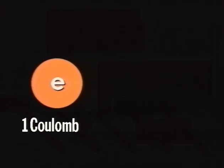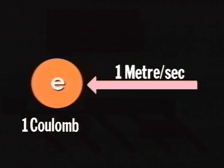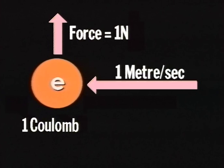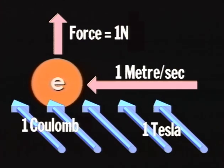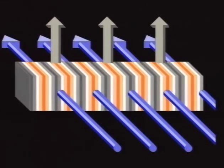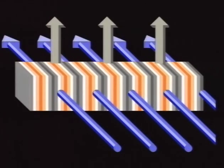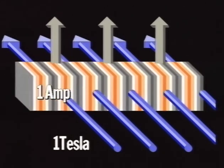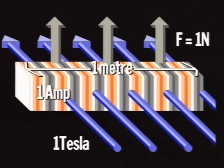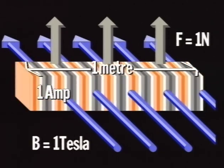We define the magnetic field strength in the most obvious way. A charge of one Coulomb travelling at one metre per second will experience a force of one Newton if the field has a strength of one Tesla. Or in another way, a conductor with a current of one amp in a field of one Tesla will experience a force of one Newton per metre per amp. The field strength is written as B.